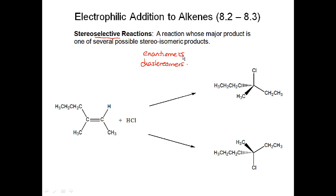To have stereoisomeric products, you need to form products that are enantiomers, or have the possibility of being enantiomers. What does it take to have the possibility of enantiomers? You need to form a chiral center. Or if you form more than one chiral center, you have the possibility to form diastereomers. But the critical part is that it has to be selective.